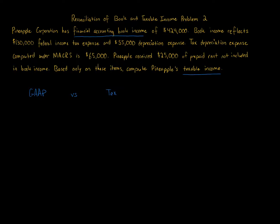Permanent differences are things that will not change. We treat something for tax purposes one way and for book purposes a different way, creating a permanent difference. A perfect example is municipal bond interest — we include it in financial accounting income but we do not include it in tax income, and it's never going to be included for tax purposes. Temporary differences, or timing differences, result in changes over time where both financial accounting and tax take into account the same number, but there are differences in the dates and years.